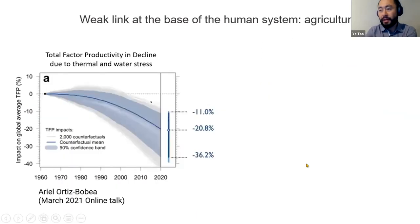A recent talk by Ariel from Cornell shows that total factor productivity in agriculture has been decreasing by about 20 to 30 percent. As we predicted in 2019, agriculture is a weak link for human systems and is really suffering as a result of multiple factors, including climate change and soil degradation due to industrial agriculture.